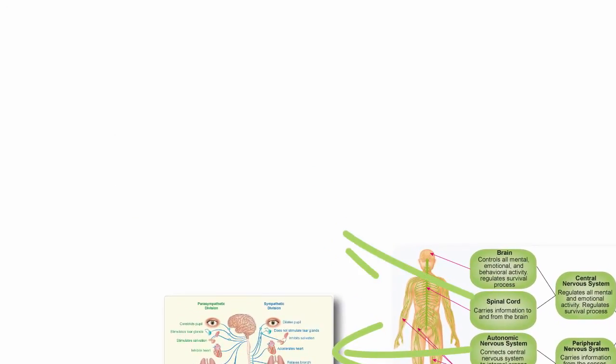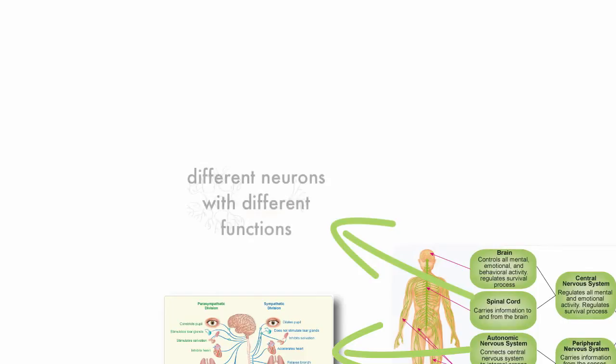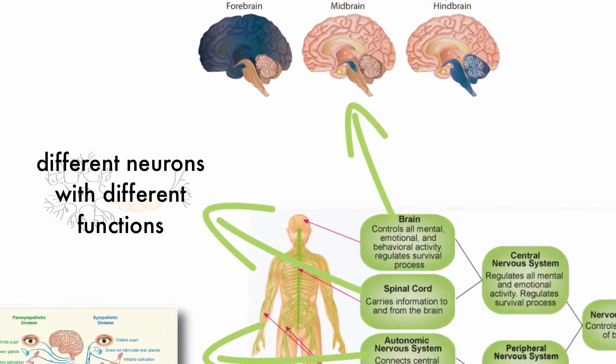The spinal cord can be divided into the types of neurons and their functions, but we can save that for another day. Right now let's turn to the brain. Various researchers have suggested different ways of dividing the brain, so if what I describe isn't exactly what you remember, do some research to see why.